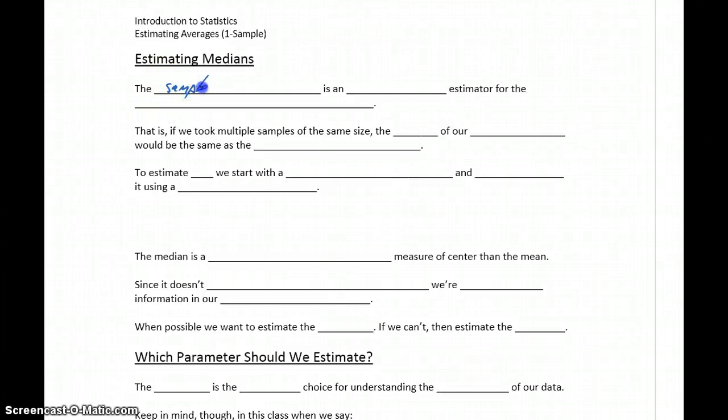The sample median, which we'll abbreviate with M bar, so the letter M with a bar over the top of it, is an unbiased estimator for the population median, which is indicated by the letter M.